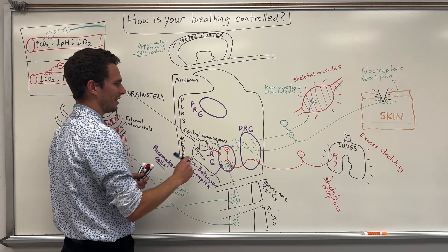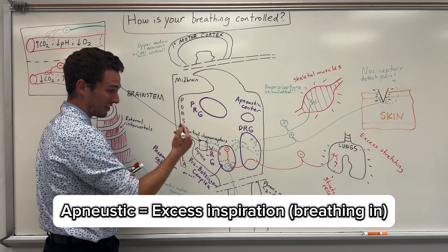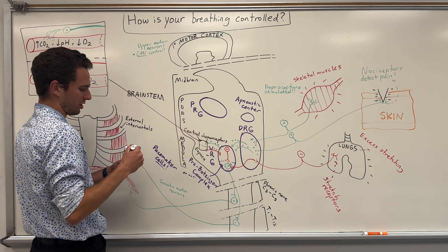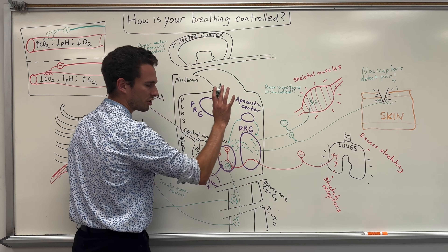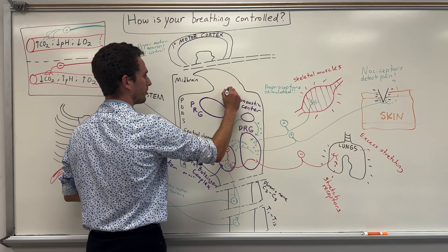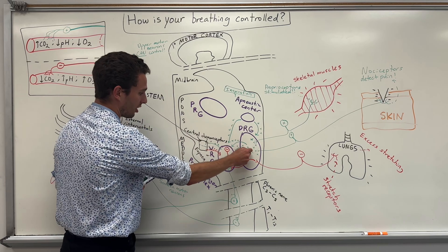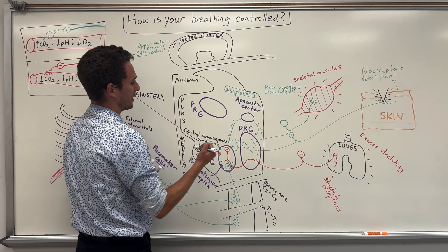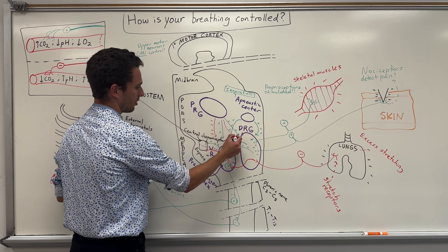The PRG will work hand in hand with a small center just dorsal to it called the apneustic center, which basically means excessive breathing in. The apneustic center will be able to communicate with either the DRG or the VRG directly. Drawn in green, the apneustic center really amplifies the effect of breathing in. At the same time, the PRG — the Pontine Respiratory Group — can also influence the DRG and the VRG, modulating the respiratory rhythm with either stimulatory or inhibitory effects.